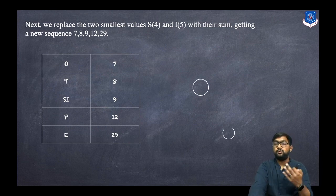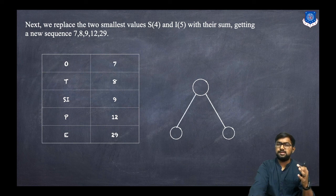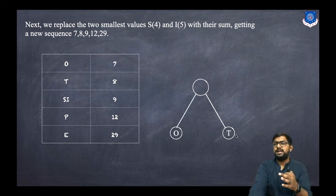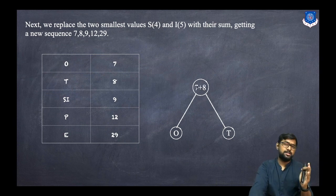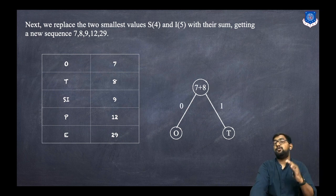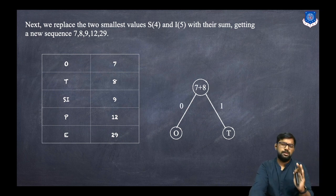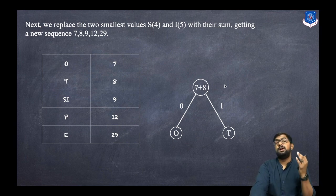Using entries o=7 and t=8, we construct a binary tree labeled 'ot' with weight 7+8=15. The left edge gets 0 and the right edge gets 1, giving the subtree for o and t.